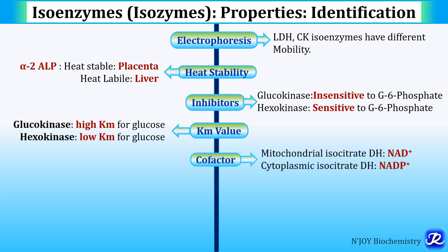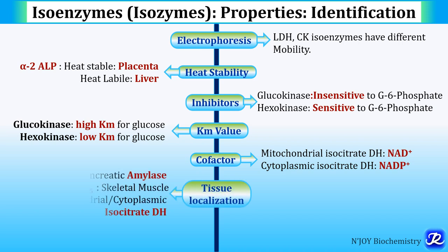Different isoenzymes require different cofactors. For example, the mitochondrial variant of isocitrate dehydrogenase requires NAD as a cofactor, while cytoplasmic isocitrate dehydrogenase requires NADP as a cofactor.